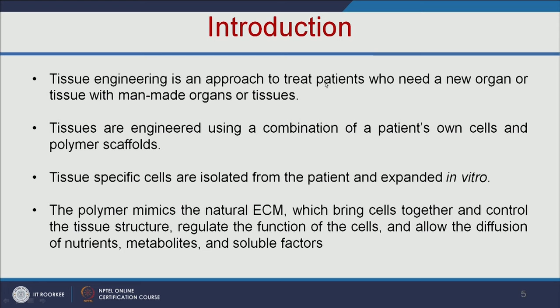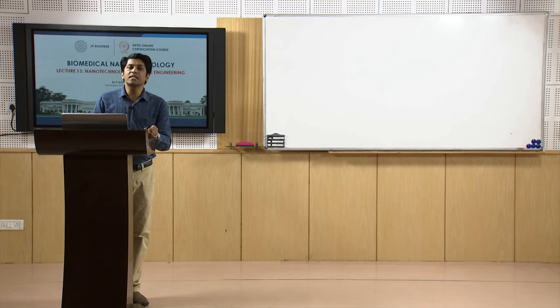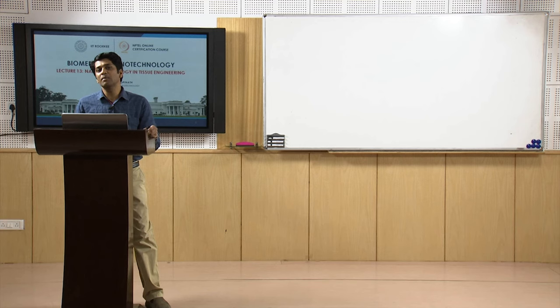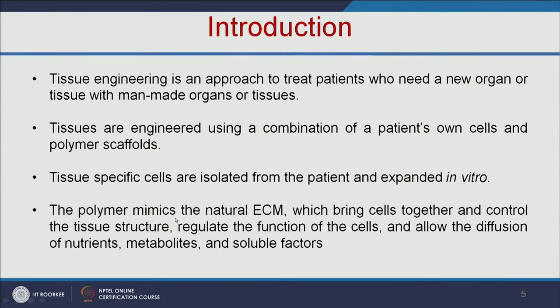Tissue engineering is an approach to treat patients who need a new organ or tissue with the manmade organ or tissues. The tissues are engineered using a combination of the patient's own cells and a polymer scaffold. We take the patient's own cells, add them on the polymeric scaffold, grow the tissue in the lab, and then implant it into the patient. The polymeric scaffold will mimic the natural extracellular matrix (ECM), which brings cells together and controls the tissue structure and regulates cell function.